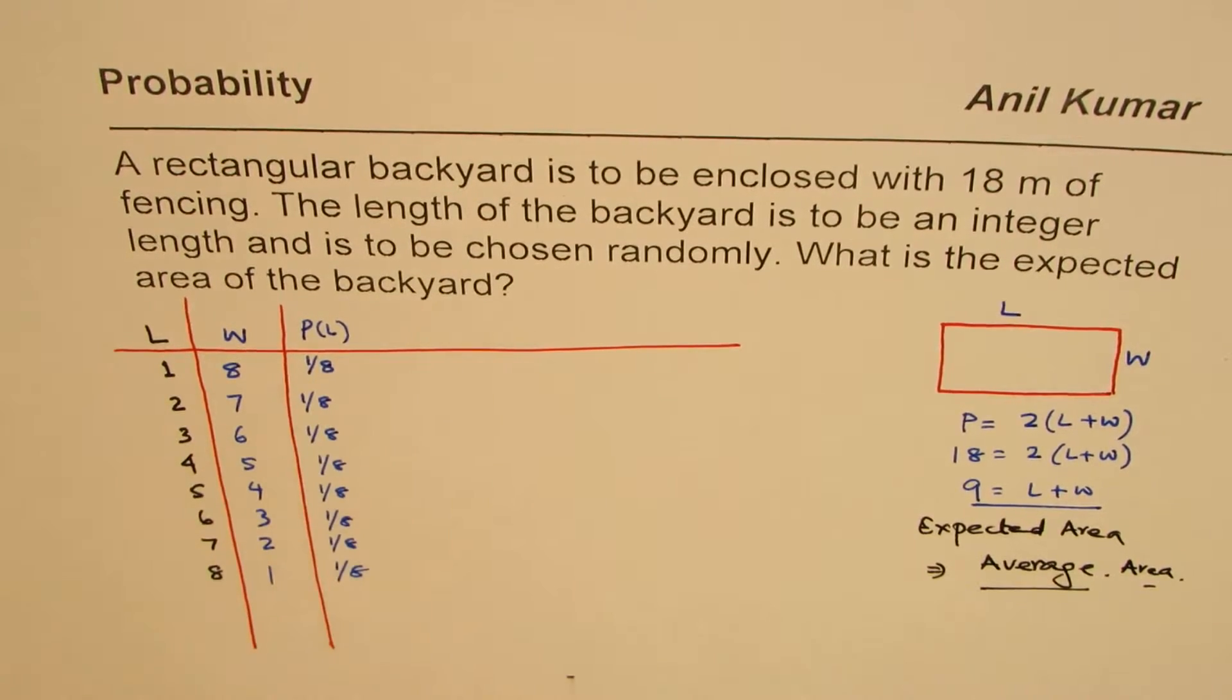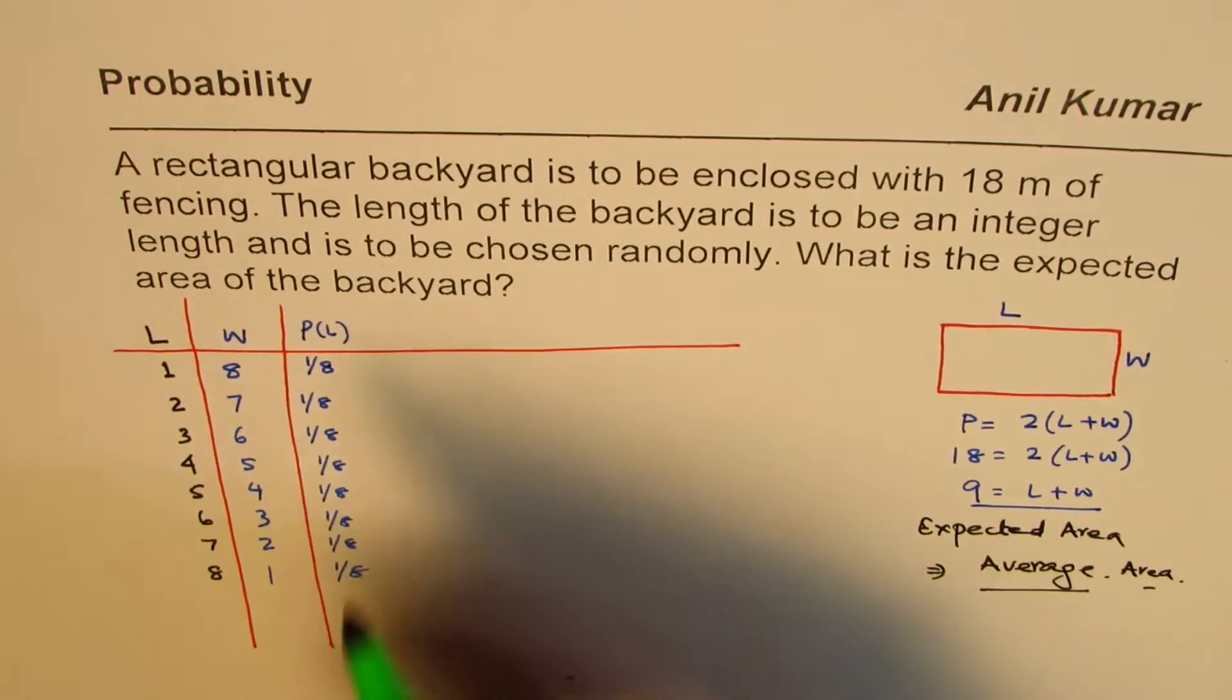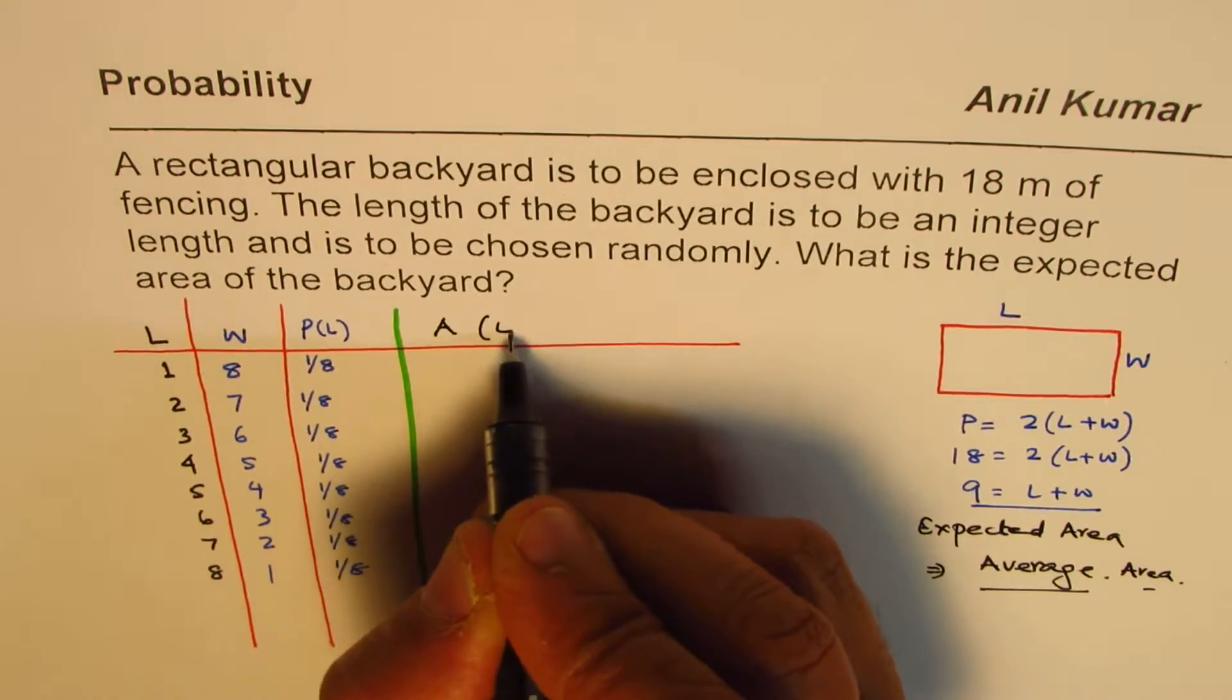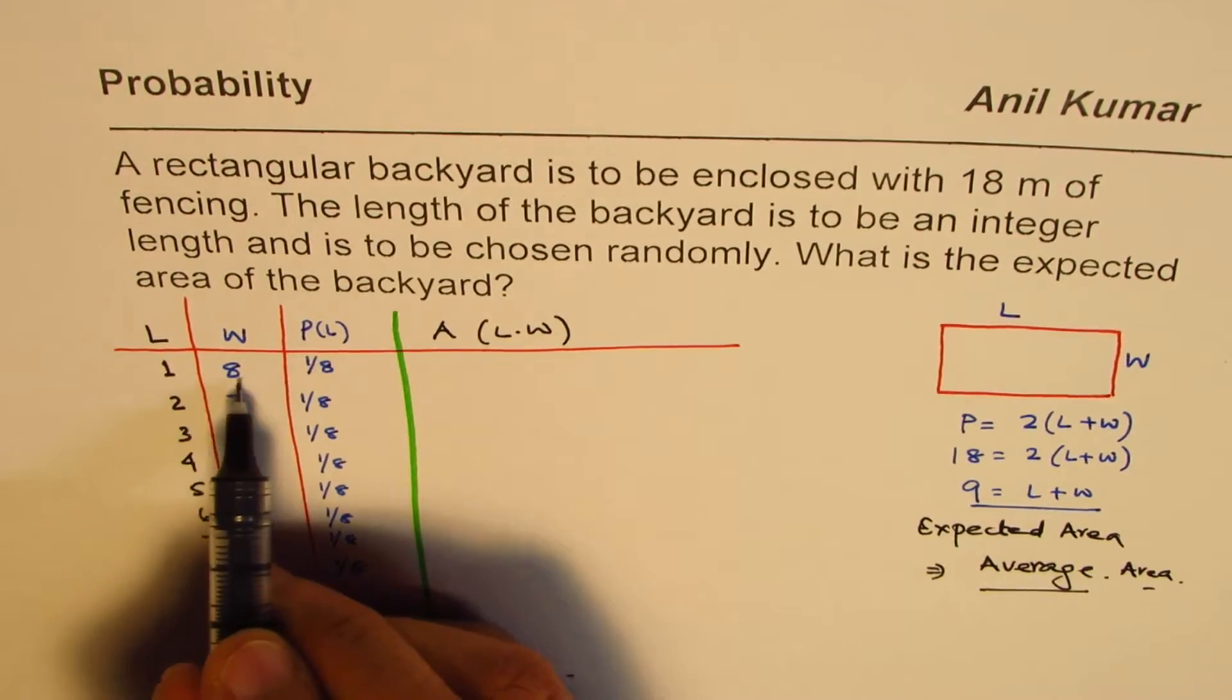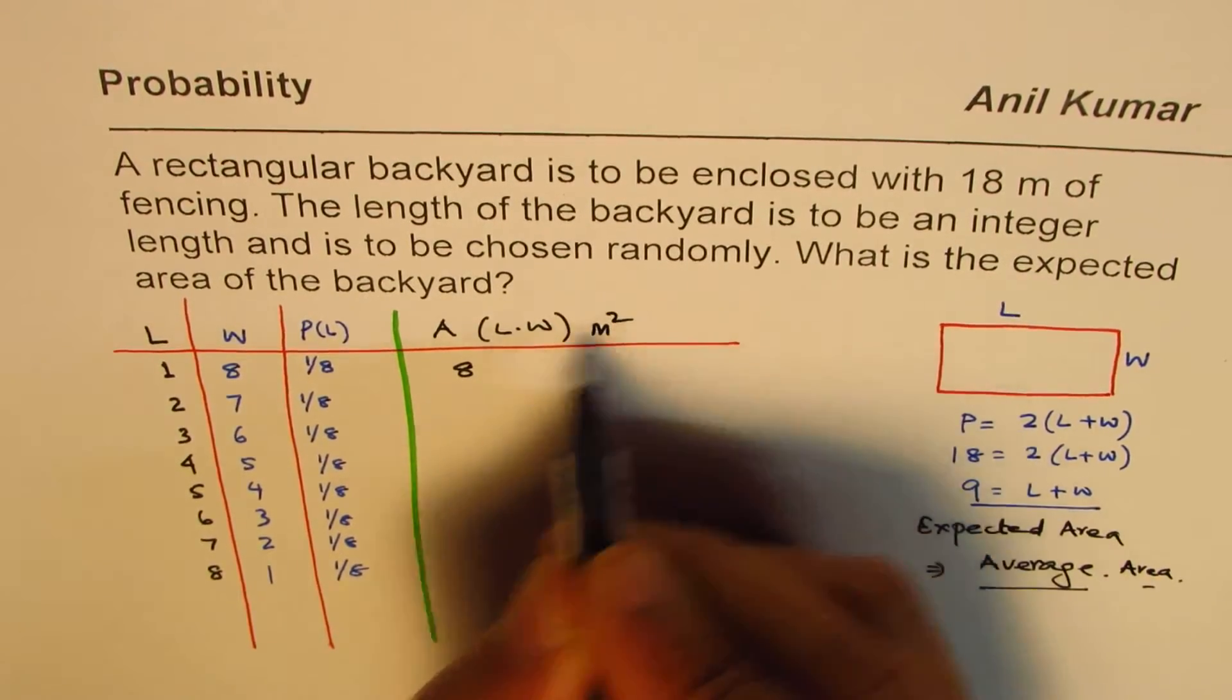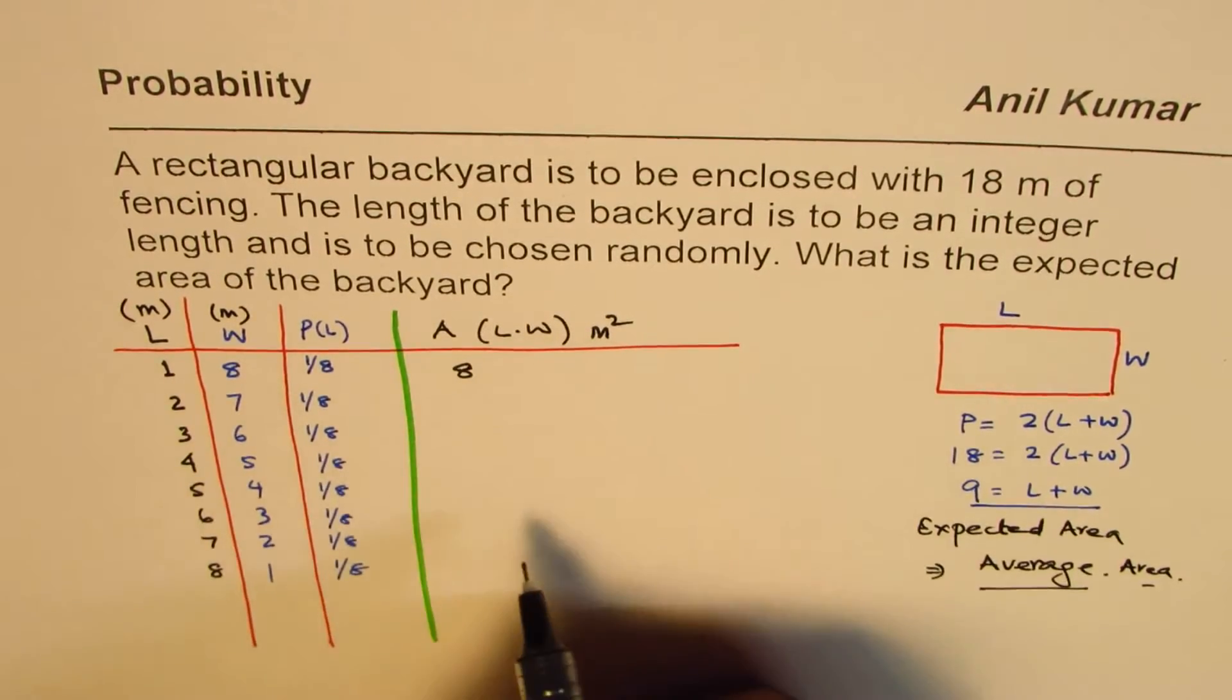So with probability, we could actually multiply, add, and then find the mean. We could do that. Now what we will do here is kind of slightly different. So what I will do here is create a column for area now. So area, which is length times width. So if I multiply 1 times 8, I get the area, which will be 8 in this case. And since it has meters, the units will be meter squared. All these units are in meters. For length and width, area in meter square.